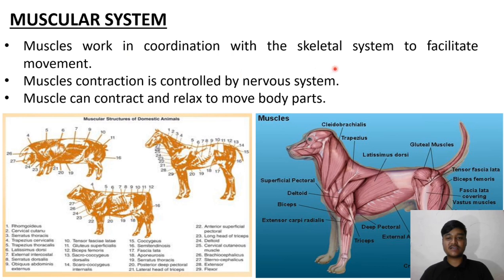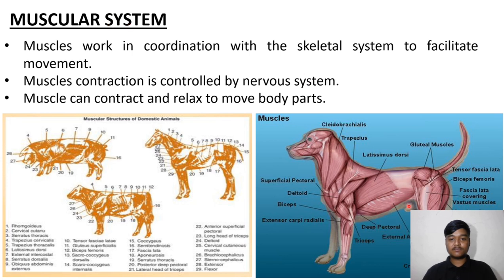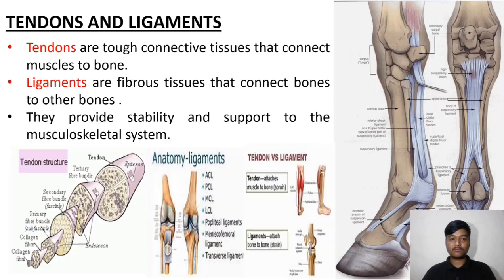The muscular system works in coordination with the skeletal system to facilitate movement. Muscle contraction is controlled by the nervous system. Muscles can contract and relax to move the body parts. You can observe the muscular system of dog, sheep, and horse.